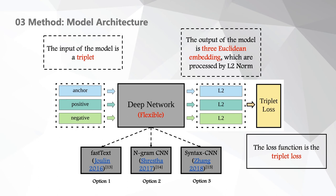As shown in the figure, the input is a triplet — an anchor, a positive, and a negative. The output is three Euclidean embeddings processed by L2 normalization, mapping them to the surface of a sphere. The loss function is the triplet loss, which separates anchor and positive from negative in Euclidean space. The deep network is flexible — available models include FastText, ngramCNN, and syntaxCNN. Considering the tradeoff between performance and model complexity, we choose ngramCNN as our deep network for medium performance and complexity.